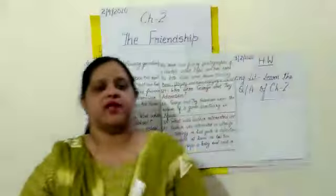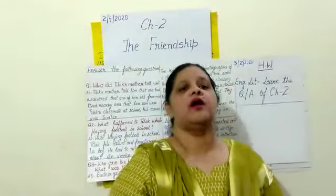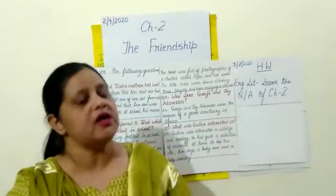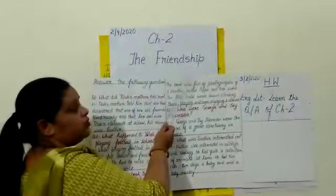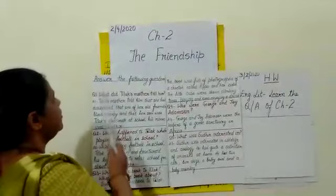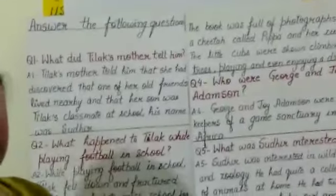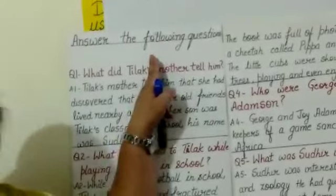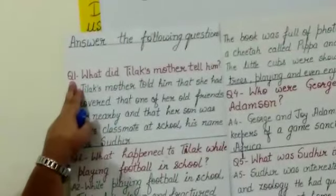Hello children, I hope you all have done the word meanings and difficult words in your copies. Take out your copies so that we can do the question answers of this second chapter. Put the heading Chapter 2, 'The Friendship,' and put the subheading 'Answer the following questions.' Write this subheading in one line, then draw a line. After that leave one line, then write Question 1.